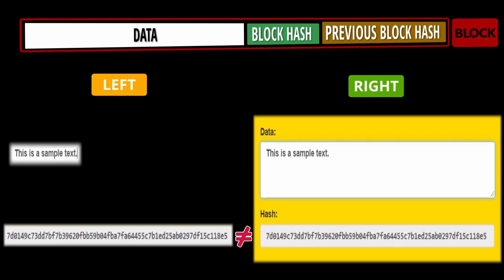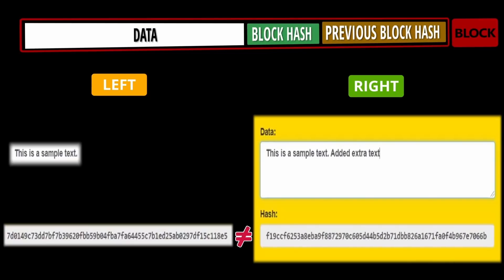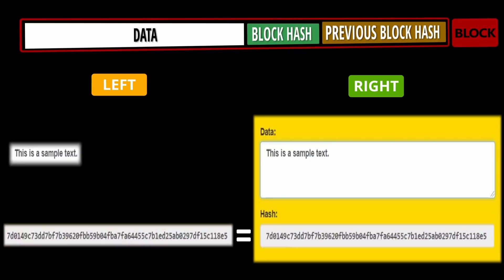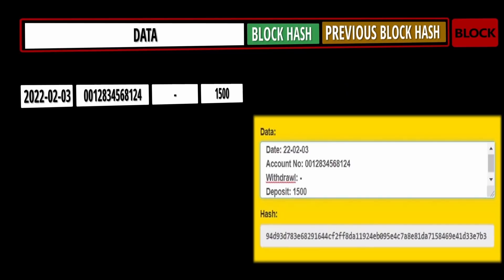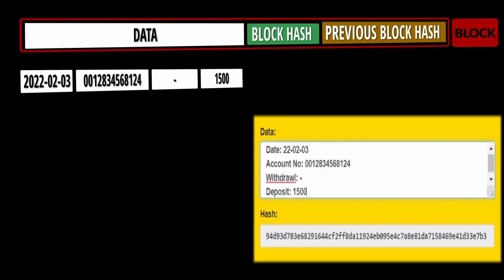Now, let's say the data is changed by adding more text. As I start adding more text to the data, the hash changes and the hash on the left does not match the hash on the right. But if we delete the extra text we just added, the hashes on the left and right match again because the data is the same. So hash is dependent on data.